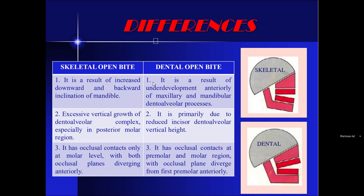Differences between skeletal open bite and dental open bite: Skeletal open bite results from increased downward and backward inclination of the mandible, which is rotated in a clockwise direction. Dental open bite results from underdevelopment anteriorly of the maxillary and mandibular dentoalveolar processes. In skeletal open bite, there is excessive vertical growth of the dentoalveolar complex, especially in the posterior molar region. In dental open bite, it is primarily due to reduced incisor dentoalveolar vertical height. In skeletal open bite, occlusal contacts exist only at the molar level, with both occlusal planes diverging anteriorly.